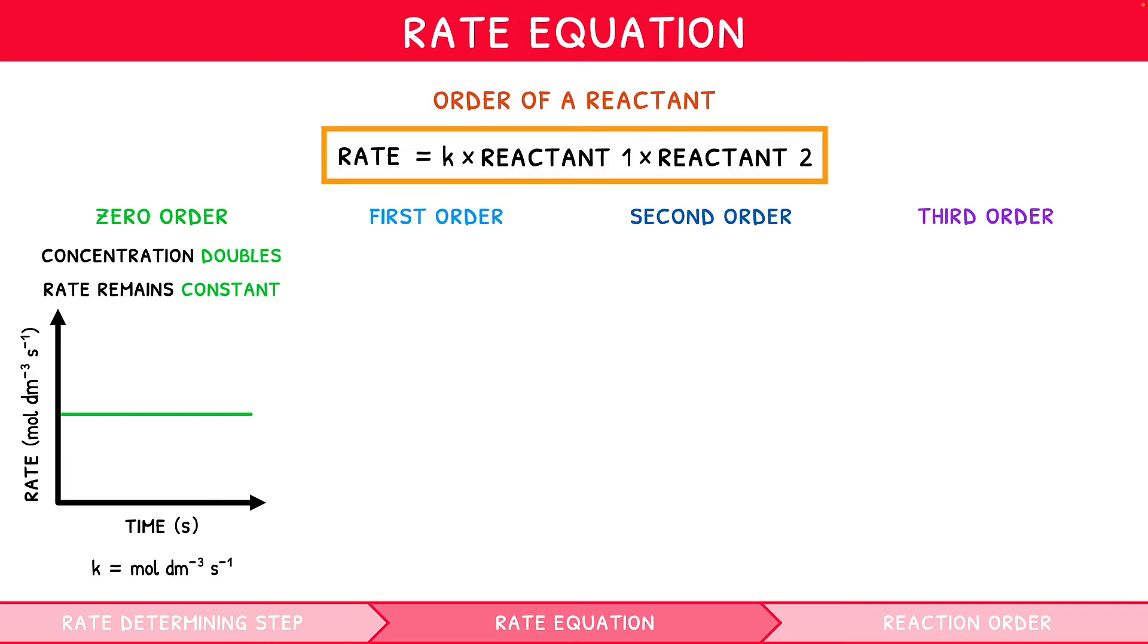For a first order reactant, if its concentration were doubled, the reaction rate would double, i.e. they are proportional, or linearly related. The units are seconds to the minus one.